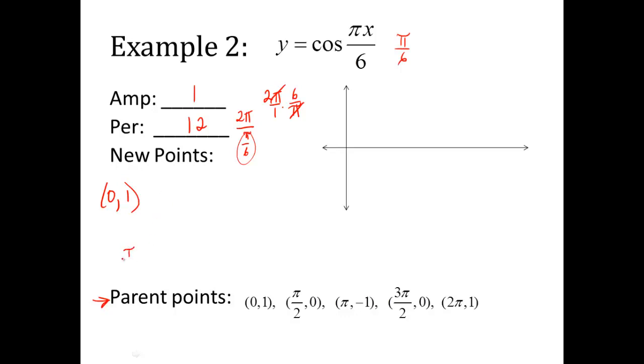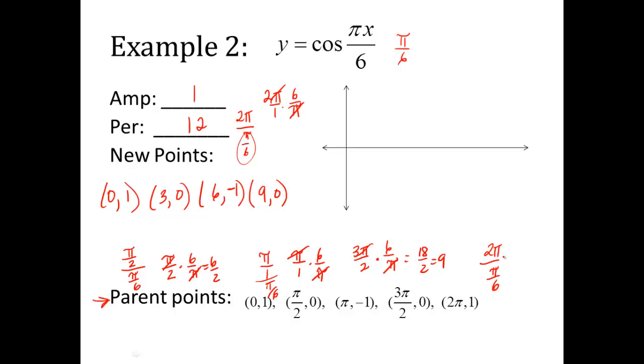The next one. Pi over 2 divided by pi over 6. Keep it change and flip it. 6 over 2, which is 3. Y is still 0. So next one, pi divided by pi over 6. I've got to flip the bottom. So it's going to be pi over 1 times 6 over pi. Those cancel, and my new x value is 6. My y value is still negative 1. 3 pi over 2 divided by 2 divided by a fraction. I'm going to flip the bottom. 6 over pi. Pi's cancel. I get 18 over 2. Guess what? That's 9. 2 pi divided by pi over 6. Keep it change and flip it. Pi's cancel, and 2 times 6 is 12. So my last point is 12. I have a 1.